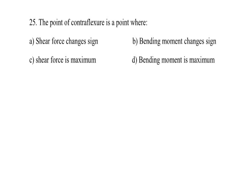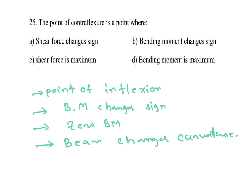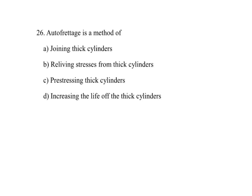The point of contra flexure is a point where: A — shear force changes sign, B — bending moment changes sign, C — shear force is maximum, D — bending moment is maximum. The point of contra flexure is also called the point where bending moment changes sign, the bending moment is zero, and the beam changes curvature. B is the answer.